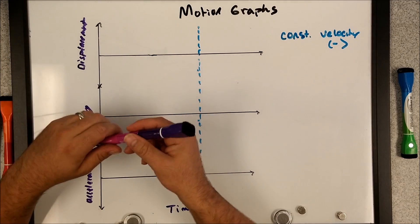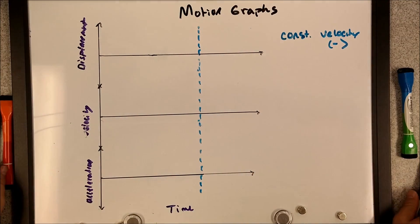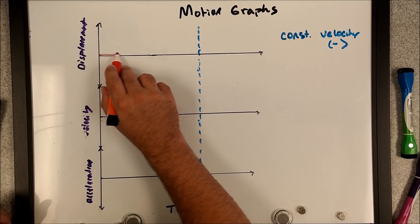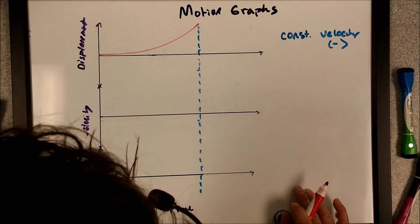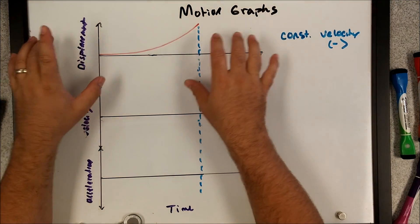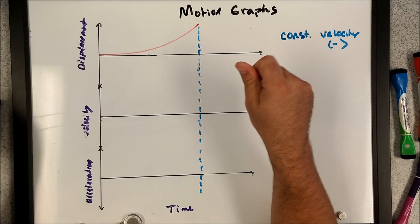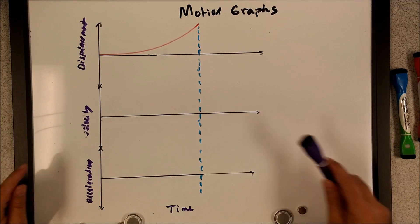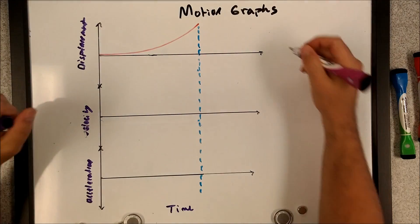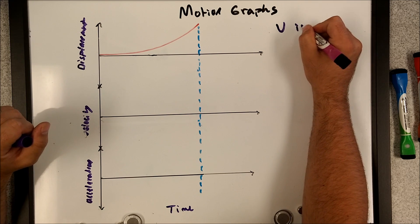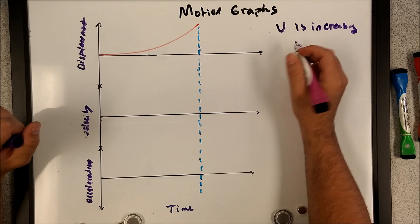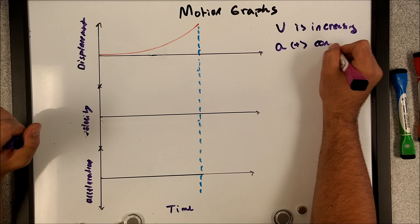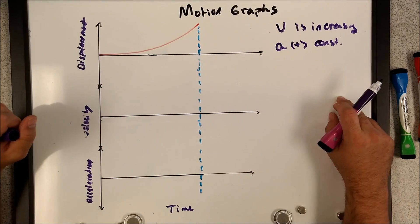Now a displacement time graph — this time I'm going to make a curve so we can see how that translates into the other two graphs. We've got a nice looking curve. No longer is it constant velocity, because the slope of a displacement time graph is velocity, and the slope is constantly changing, which means the velocity is increasing. We're getting further away from the zero position, which means acceleration is present — it's positive in this example. You can tell it's constant acceleration because it's a nice smooth curve, not going up and down in all sorts of directions.